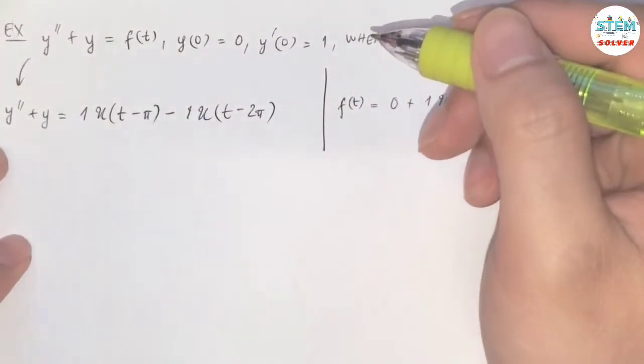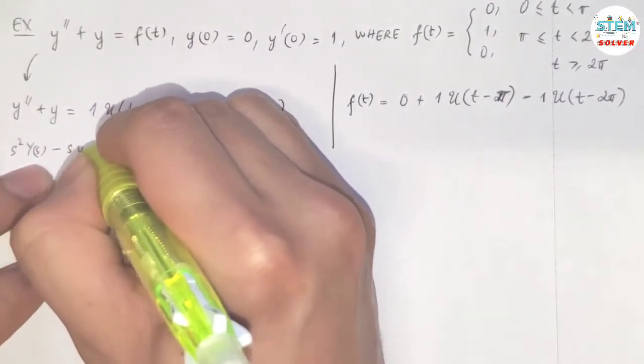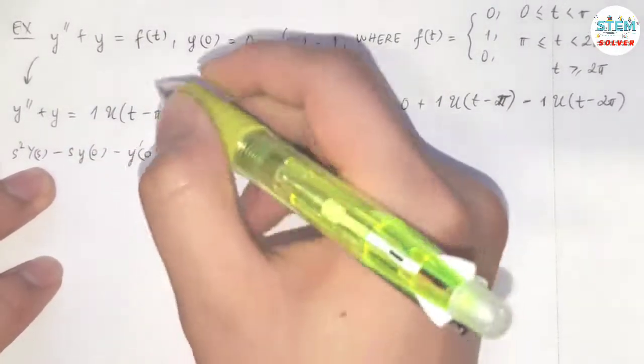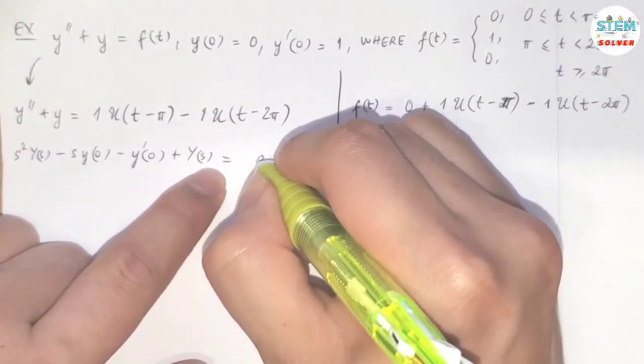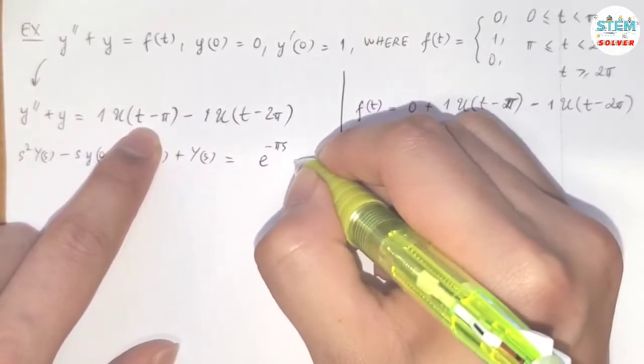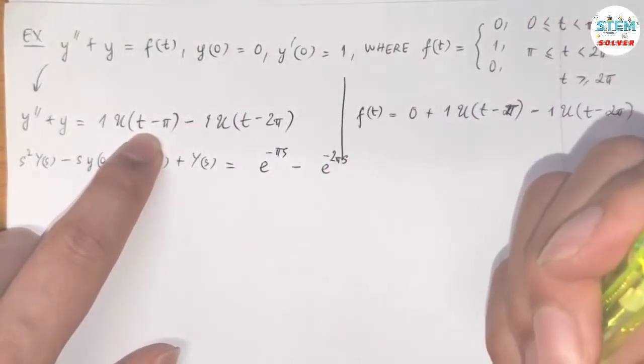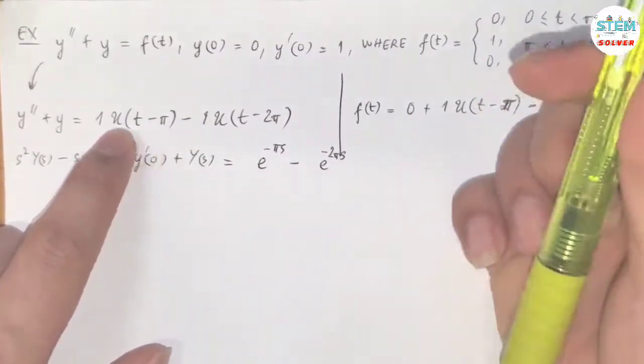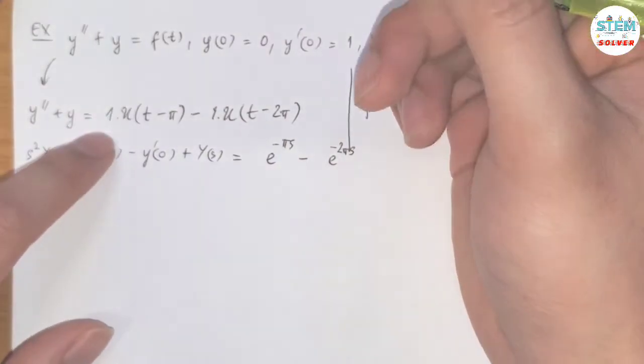Okay, now here's the derivative theorem. We have s²Y(s) - sy(0) - y'(0) + Y(s) = e^(-πs) - e^(-2πs), isn't it? Nope. The reason I put the number one here is I put it there for focus.